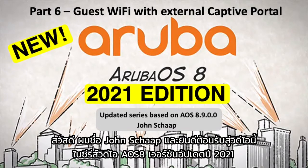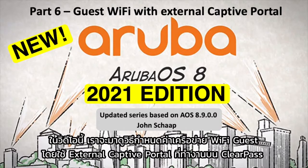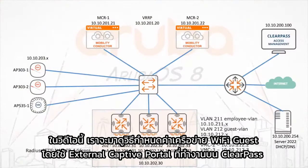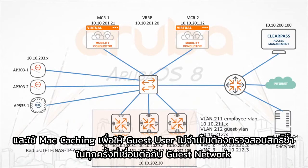Hello, this is John Schaap and welcome to this video in the updated 2021 version of iOS 8 video series. In this video we are going to have a look at how to configure a Wi-Fi guest network using an external captive portal running on ClearPass and also using MAC caching so that guest users do not need to re-authenticate every time they connect to the guest network.